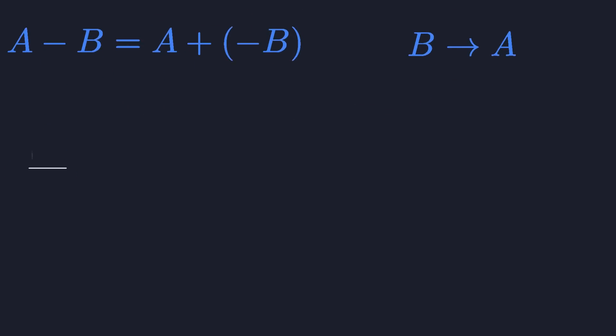Let's begin with a simple one-dimensional number line. 5 minus 2 is 3, which is the same as saying that going from 2 to 5 requires 3 steps to the right.